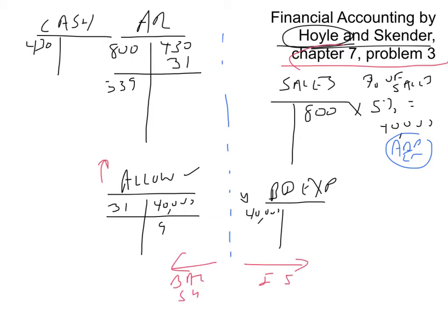Now we start year two. The income statement accounts close out — they go back to zero as balances shift into retained earnings — so sales and bad debt expense both become zero. Then we make the transactions again: sales of $800,000 means debit accounts receivable and credit sales. They collect $430,000 — credit accounts receivable and debit cash. They write off $31,000 more, so you credit accounts receivable for $31,000 and debit the allowance balance for $31,000. The process is always the same.